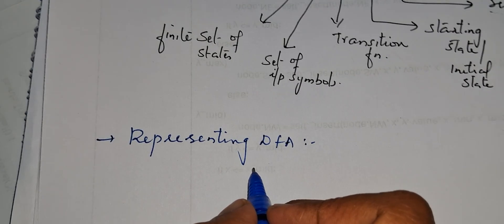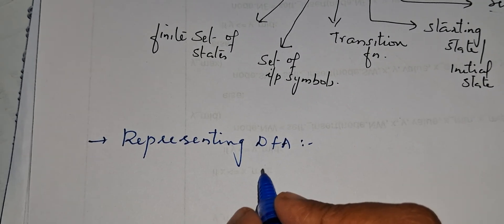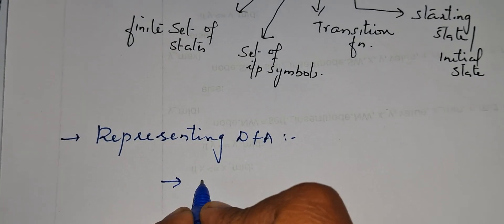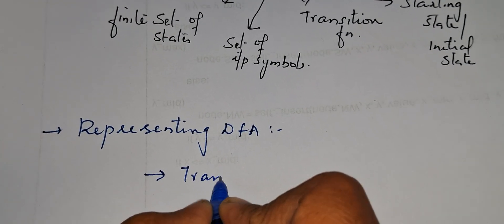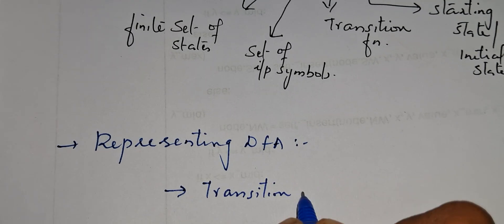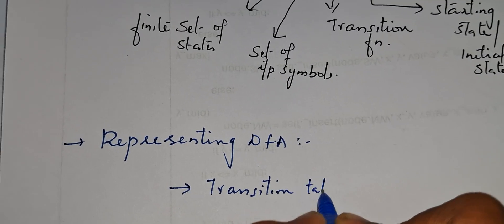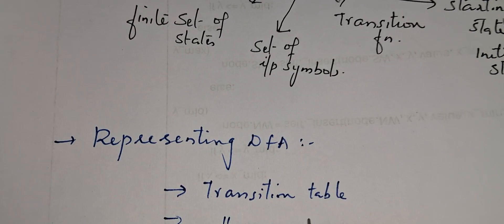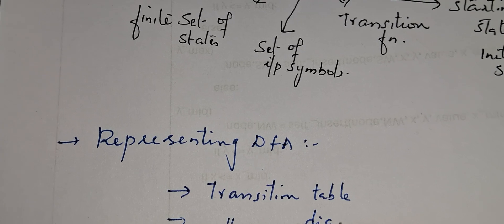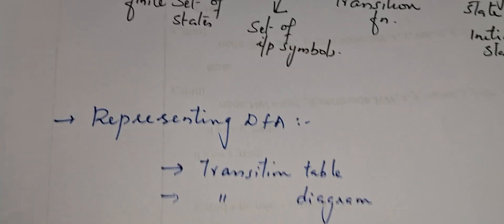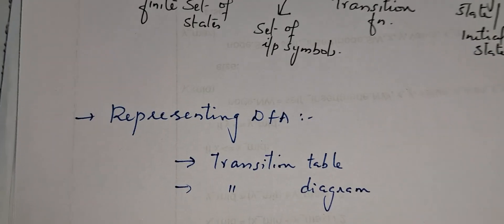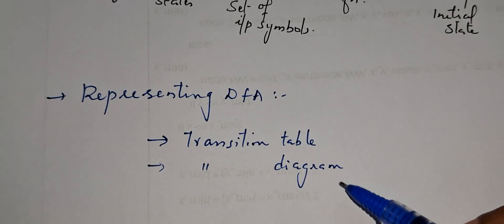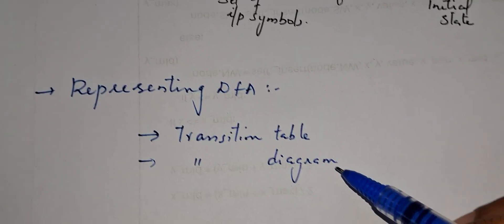We can represent a DFA in two ways. One is by using a transition table — by drawing a table we can represent a DFA. Another is a transition diagram, that is by using pictorial representation.